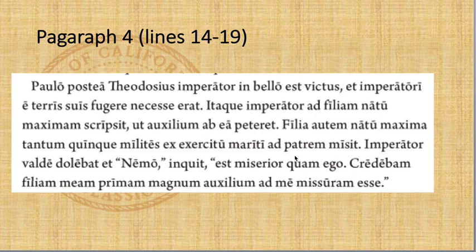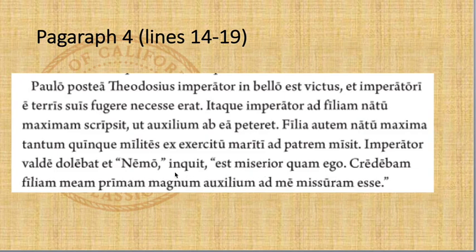The emperor grieved very much — or was in very great grief — and said: 'Nemo miserior quam ego est' — no one is more wretched than I. Miserior is a comparative adjective from miser, meaning wretched, so miserior means 'more wretched.' No one is more wretched than I.